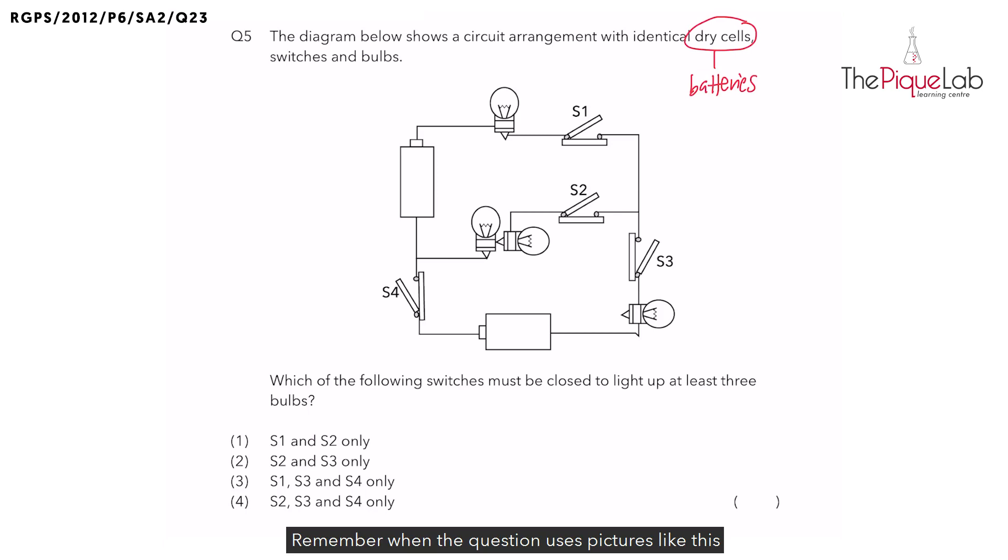Remember when the question uses pictures like this instead of circuit symbols, we must be suspicious and check that the batteries and bulbs are connected properly. Now let's check the batteries. Even though they are not connected together, they are both facing in the same direction.